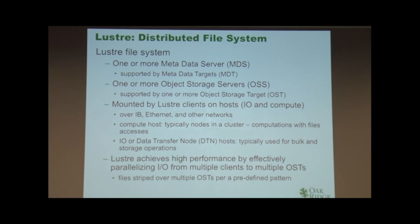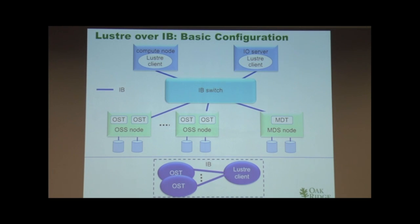These are just the real basics. I'm actually trying to run Lustre clients on a compute host, which is part of a compute cluster — that's one class of hosts. The other one is what we call data transfer nodes, which are nodes used only for data transfer purposes. I want to support Lustre clients on both of these types of nodes. This is just a cartoon version: Lustre over IB with a compute-type client and a DTN-type client.